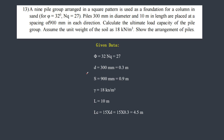This numerical is given in the question bank of Mumbai University. A nine-pile group arranged in a square pattern is used as a foundation for a column in sand. φ = 32°, Nq = 27. Diameter of pile is given along with a few other values including unit weight of soil. We have to calculate the ultimate load capacity of the pile group and show the arrangement of the piles.